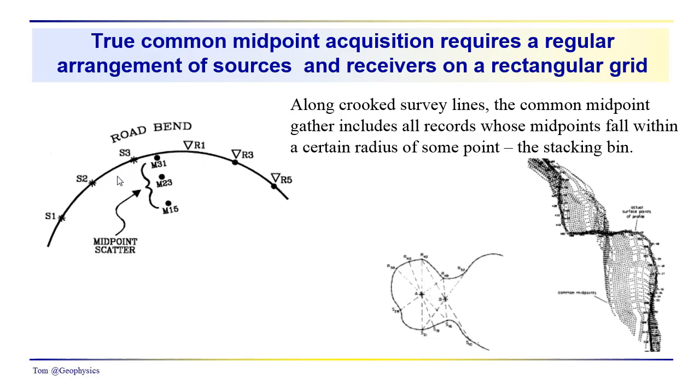For source 2, receiver 3, we have a midpoint here. Source 1, receiver 5, we have a midpoint over here. So the midpoints in the gather are not from the same location. We're going to have scatter in the location of your midpoints associated with the geometry of your source receiver layout at the surface.